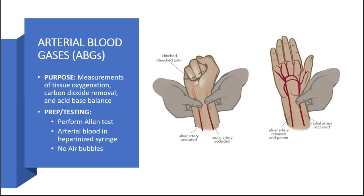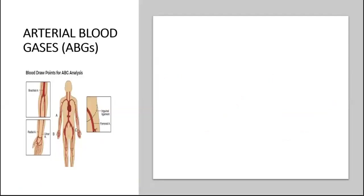Part of your preparation is that you must collect your blood samples in a heparinized syringe — we don't want clotted blood in our sample. Air bubbles cannot be present in your specimen. Sample sites include the brachial artery, the radial artery, and the femoral artery.